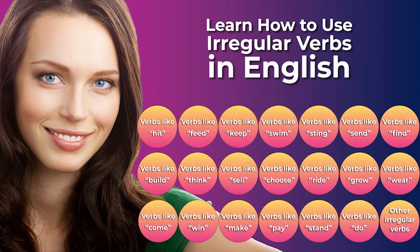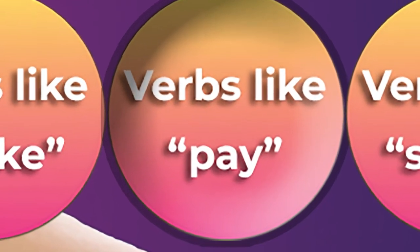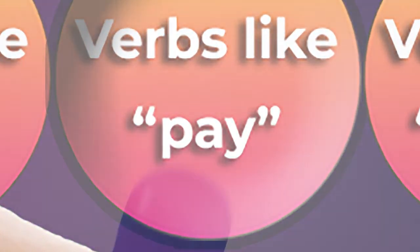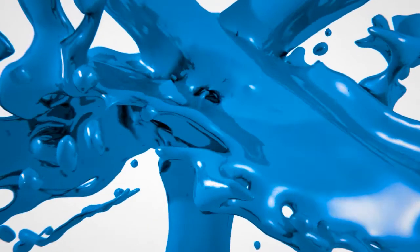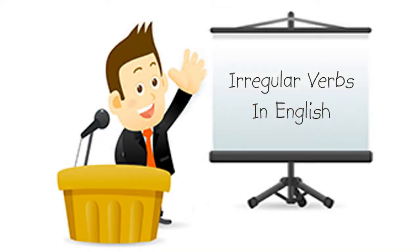These 21 short videos will help you quickly see and understand the relationships and patterns among various types of irregular verbs in English so that you can use them correctly. This video will help you see relationships among various types of irregular verbs in English. The key to understanding irregular verbs is to look for and notice the patterns.